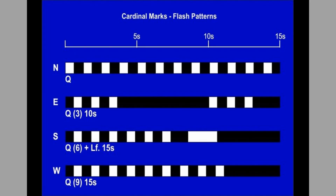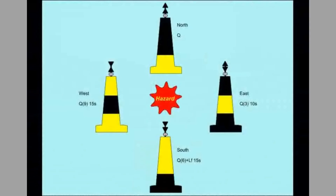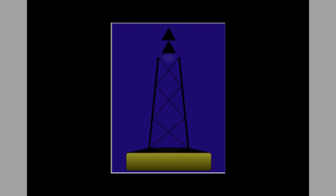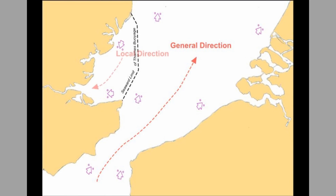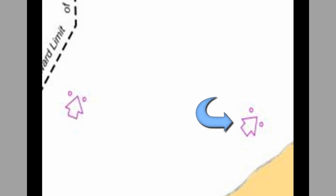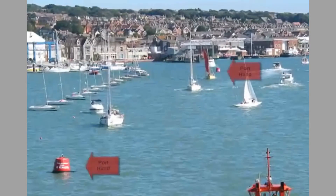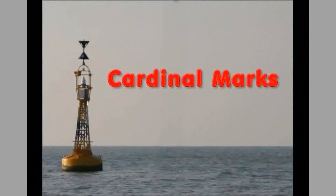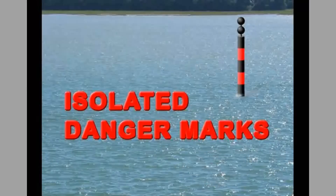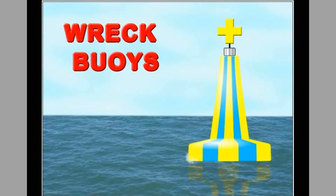You will learn the buoy classes, their shapes, colours, top marks, and the colour and pattern of any lights used to guide you at night. You will learn to find the direction of buoyage applicable in any location, and how to use this information to interpret channel markings correctly. The video explains and illustrates all the classes of mark including cardinal, lateral, safe water mark, isolated danger mark, special mark, and the newly introduced wreck buoys.